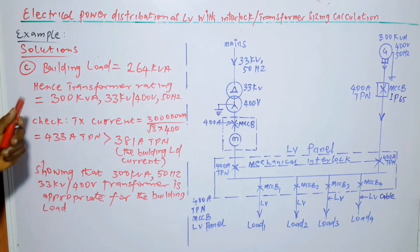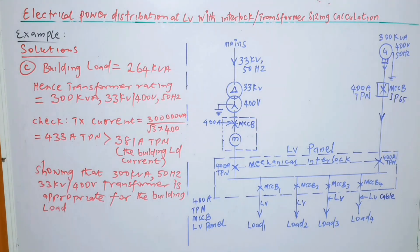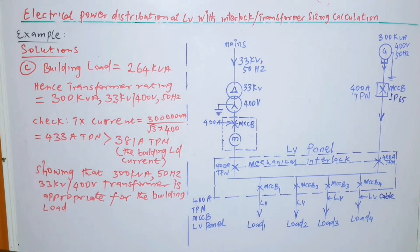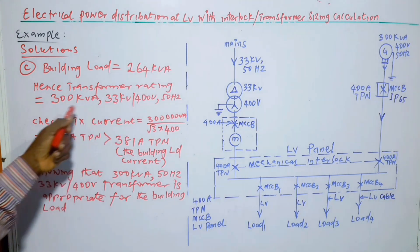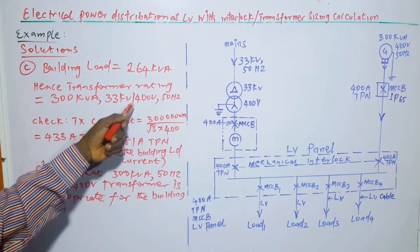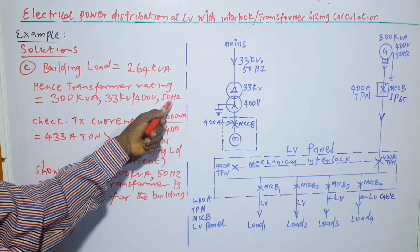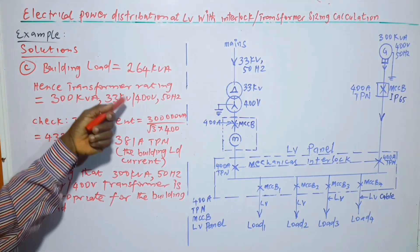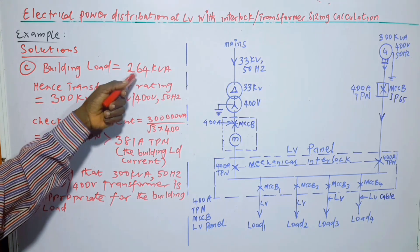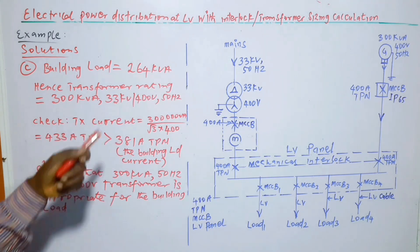Moving on, C part. To calculate the transformer rating, building load is 264 kVA. Hence, transformer rating is equal to 300 kVA, 33 kV slash 400 volts at 50 hertz. So we choose the transformer rating that is higher than the building load. So the next one is 300 kVA.